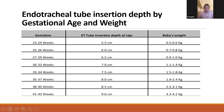Another way to estimate insertion depth is by using the gestational age and weight of the baby. Weight is a more reliable indicator. Depending on the weight: 0.5–0.6 kg use 5.5 cm; 0.7–0.8 kg use 6 cm; 0.9–1 kg use 6.5 cm; 1.1–1.4 kg use 7 cm; 1.5–1.8 kg use 7.5 cm; 1.9–2.4 kg use 8 cm; 2.5–3.1 kg use 8.5 cm; and 3.2–4.2 kg use around 9 cm.